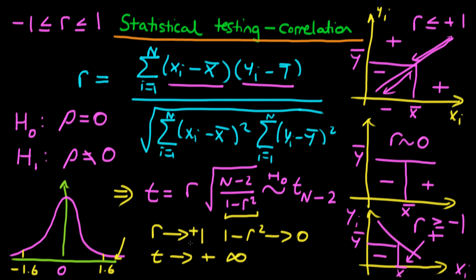Similarly, if r goes to minus 1, then again 1 minus r squared goes to 0 because we're squaring r, so it becomes 1, and then 1 minus r squared tends to 0. But the r on the top is negative, which means t actually tends to minus infinity in that circumstance. So we find ourselves in the bottom left tail of the t-distribution, and again we reject the null hypothesis because our t-statistic magnitude is greater than the critical value — something like 1.6 or 2.